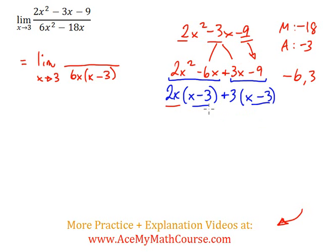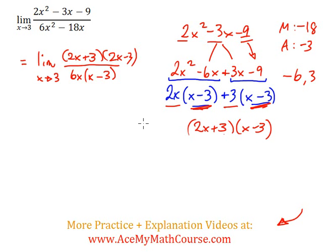So what do we get here? 2x plus 3, and the x minus 3 only once. So I get 2x plus 3 times... whoops, no, no, no. That was wrong. Second mistake of the video. Hopefully the last one. So I get x minus 3 here.